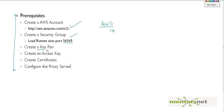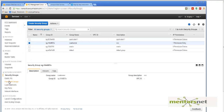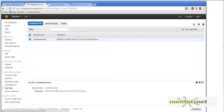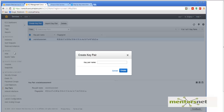Next we need to create a key pair. Note that this step is optional, but I highly recommend doing it, because using the key pair we can connect to the machine on Amazon EC2. To create a key pair, go to Key Pairs and create a new key pair — let's call it 'lr_key'.